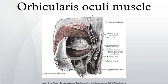The orbital portion is thicker and of a reddish color. Its fibers form a complete ellipse without interruption at the lateral palpebral commissure. The upper fibers of this portion blend with the frontalis and corrugator.